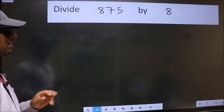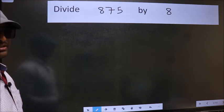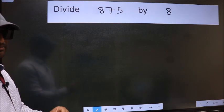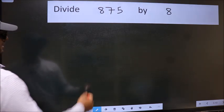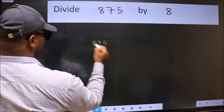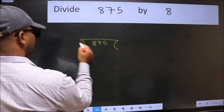Divide 875 by 8. To do this division, we should frame it in this way: 875 here and 8 here.